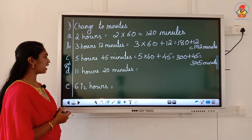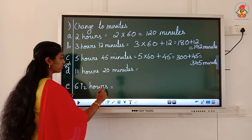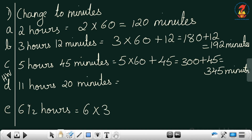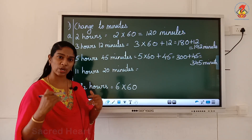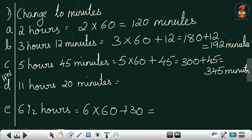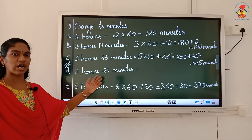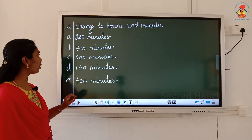Question E: 6 and a half hours. Convert 6 hours to minutes: 6 into 60. Half an hour — since 1 hour is 60 minutes, half is 30 minutes. 6 into 6 is 36, so you get 360 plus 30. The final answer is 390 minutes. This is how you convert from hours to minutes. Question D is homework.